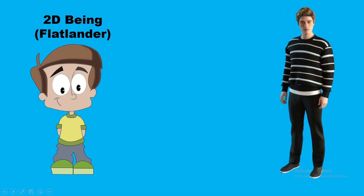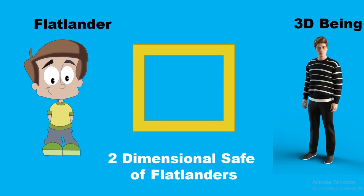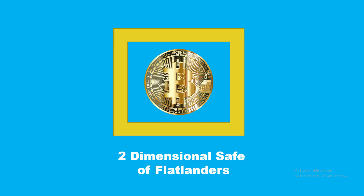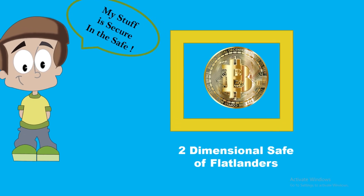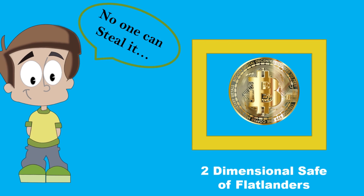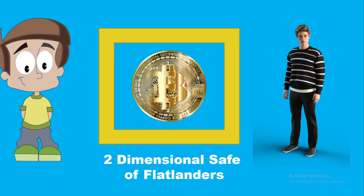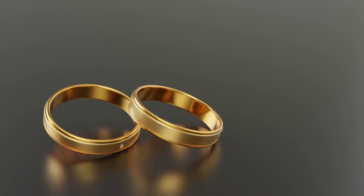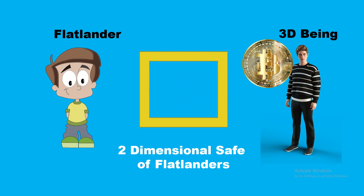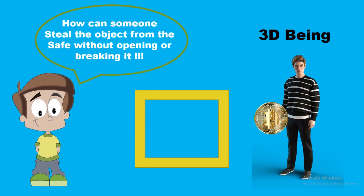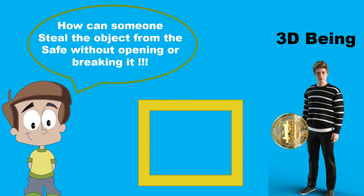Now suppose that a person from the third dimension wants to steal an object placed inside the safe of a flatlander. The safe of the flatlander would also be flat. The boundaries of the safe are enough for the flatlanders to keep their flat objects secure, as they cannot take out objects from the flat safe simply by moving it from above or below their 2D plane. But a 3D being can easily take out the object kept in the flat safe through the third dimension, simply by picking it up — just like we can pick any object placed inside a ring. This extremely simple task of the 3D being is enough to blow the mind of the 2D being. He would have no idea how someone can steal the object from the safe without opening or breaking the walls of the safe.